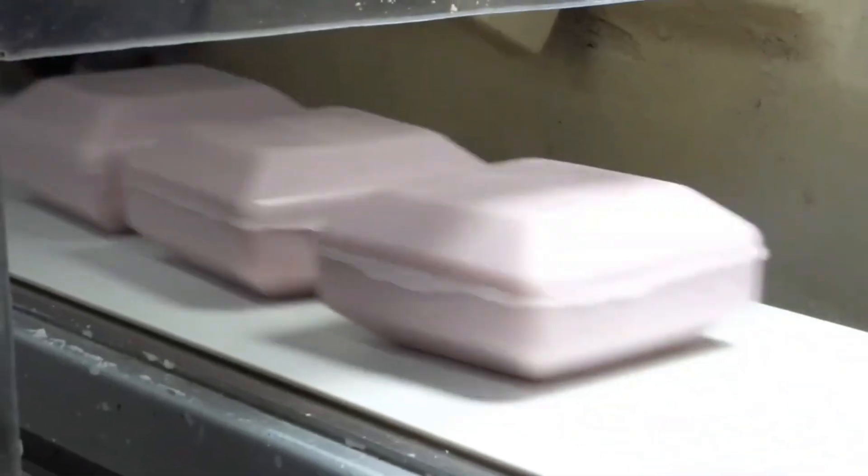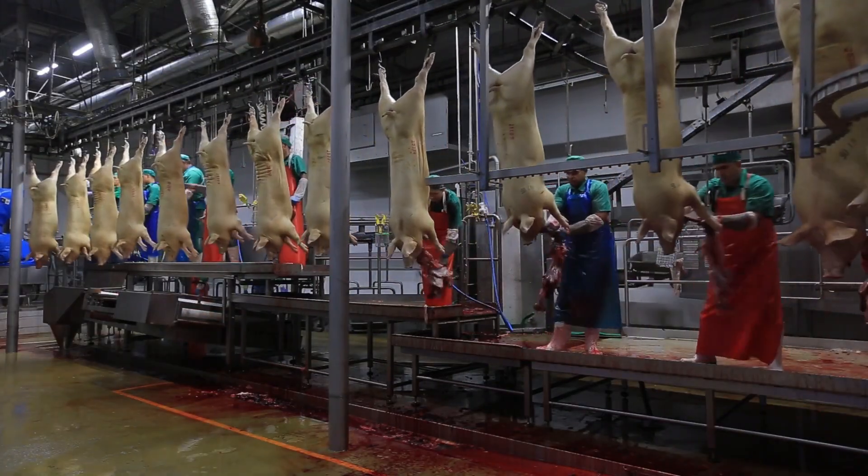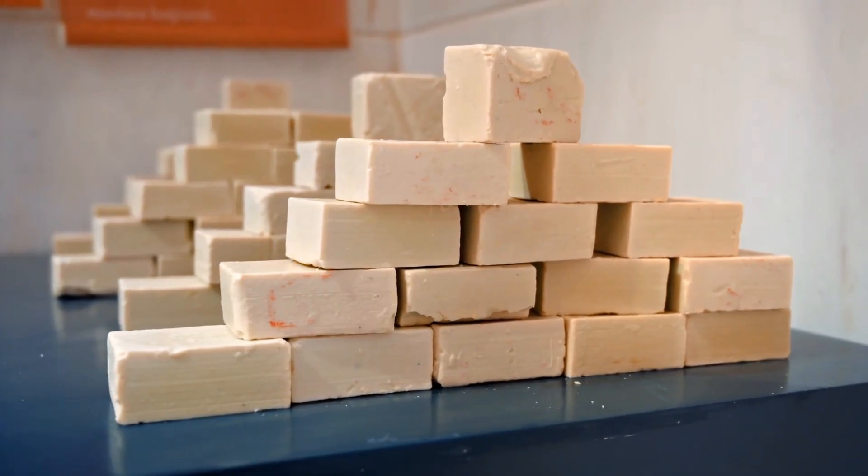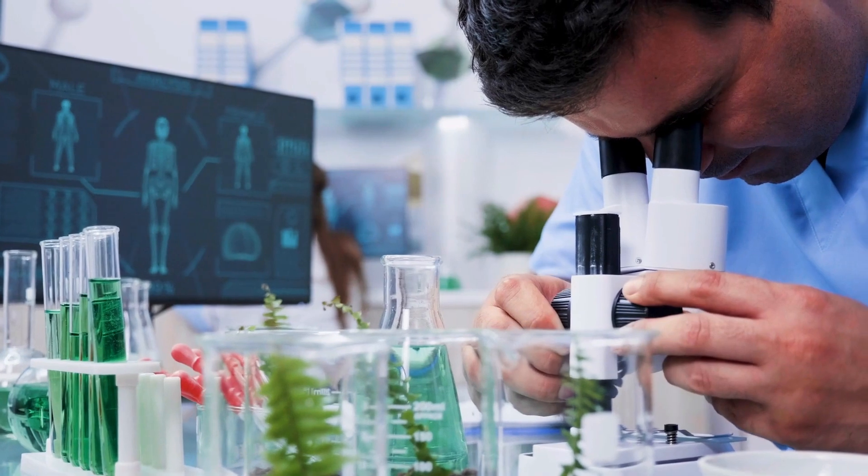Once upon a time, soap was made using animal fat—tallow, to be precise—sourced directly from slaughterhouses. It worked, but let's face it, not the most pleasant origin story for something that's supposed to make you smell good. So scientists and soap makers began to look elsewhere.